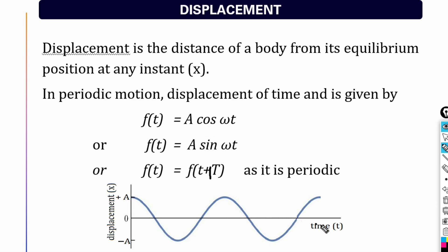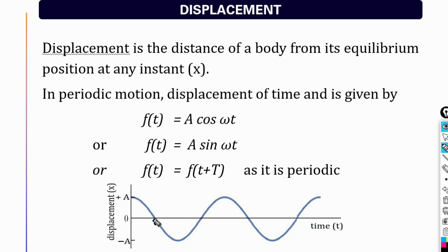Graphically, displacement is plotted along the y-axis and time along the x-axis. When the particle is at the extreme position at time equal to zero, it is at a distance A from the equilibrium position, so we choose A cos(ωt). After T seconds — that is, one time period — the particle starts from the extreme position, passes through equilibrium, reaches the other extreme, returns to equilibrium, and comes back to the initial extreme position, completing one oscillation.